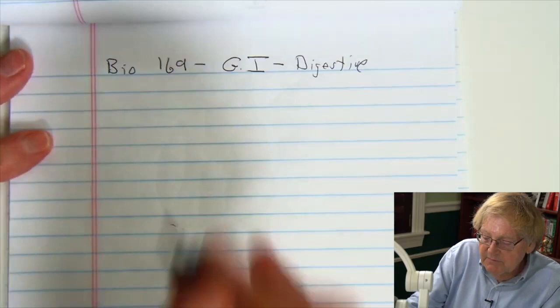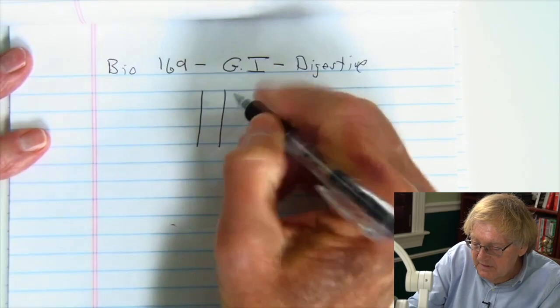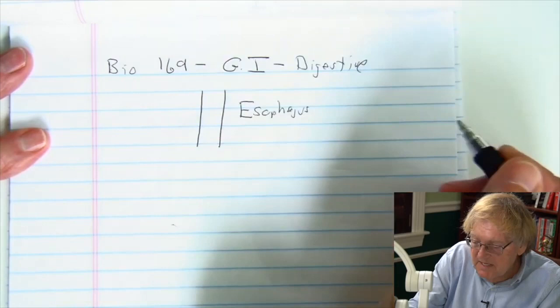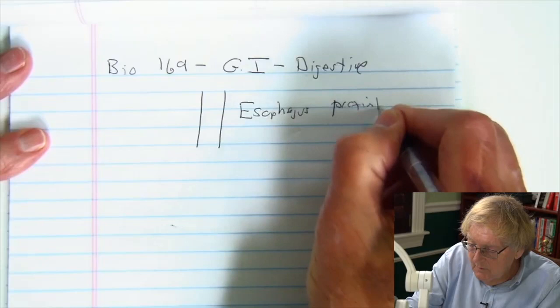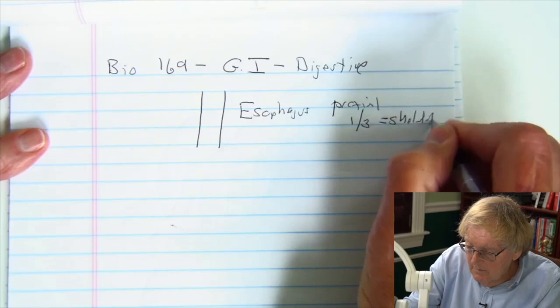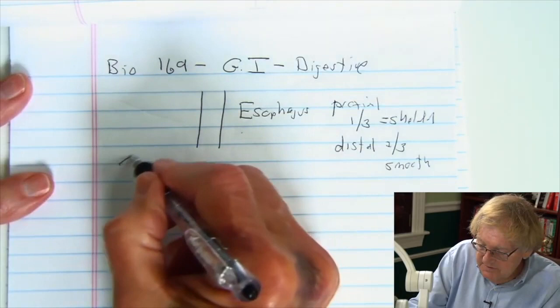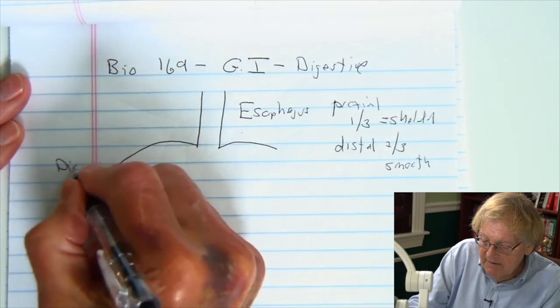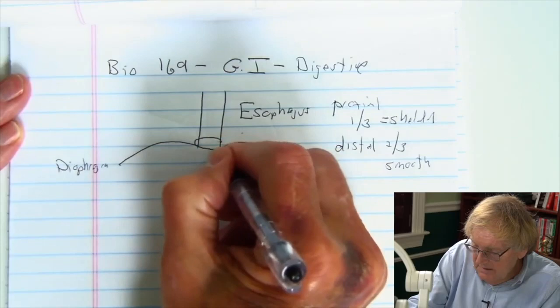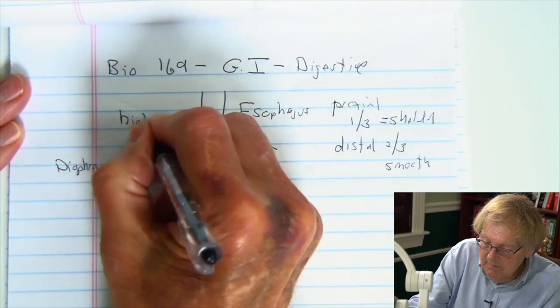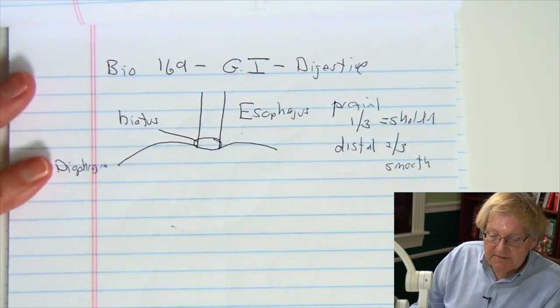When you think of the digestive system, you're going to start out with the esophagus. Here's my esophagus. Remember the esophagus is going to be the proximal one-third is skeletal muscle and the distal two-thirds is smooth muscle. That's going to allow me to swallow. That esophagus is going to pass through that dome-shaped muscle we've all talked about called the diaphragm, so that opening that's created inside of that diaphragm is called the hiatus. Hence the term hiatal hernia.